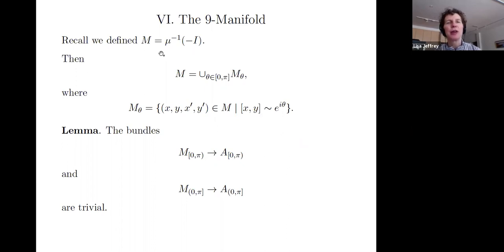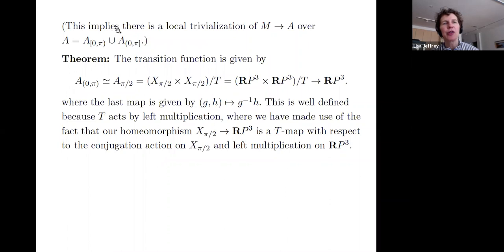So, the 9-manifold taking the level set mu-inverse of minus i. We decompose this also according to the value of theta level sets of the commutator map. And the bundles, these bundles are trivial. So, this tells you there is a local trivialization of M to A when you restrict to the subsets, these two subsets. And the transition function over the intersection A_(0,pi).